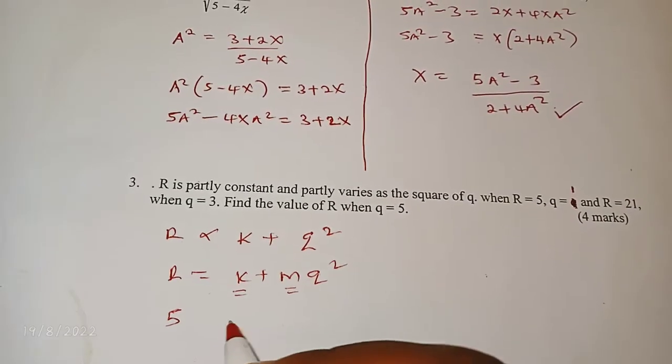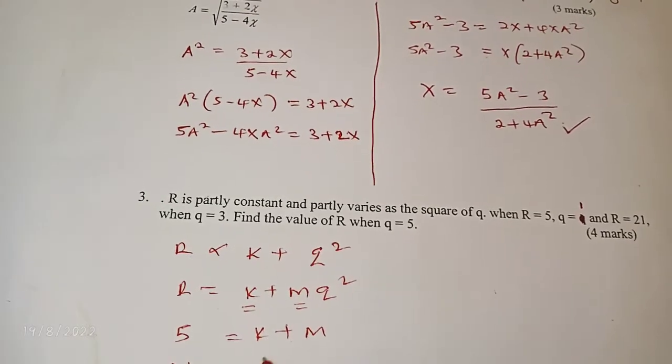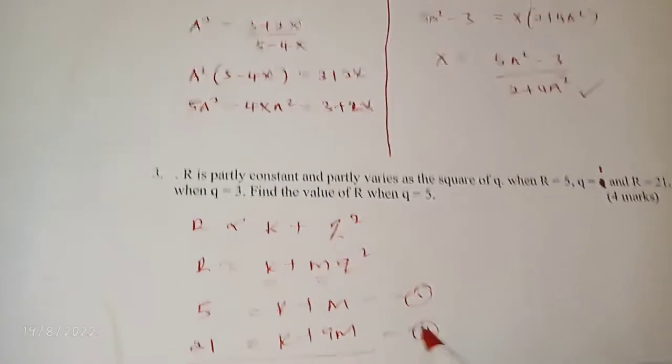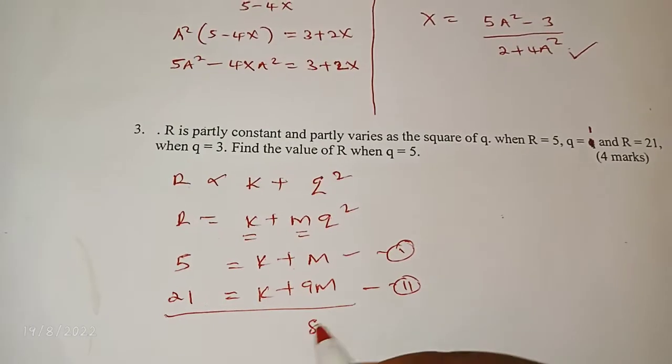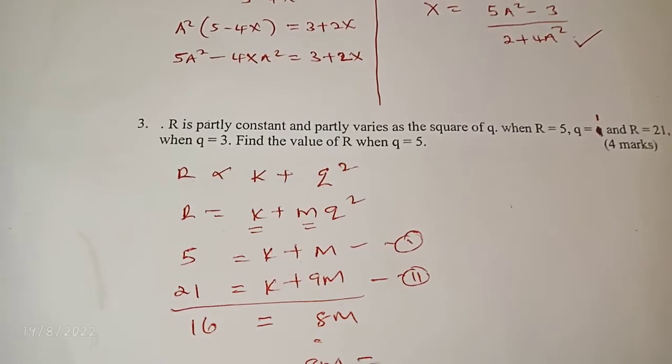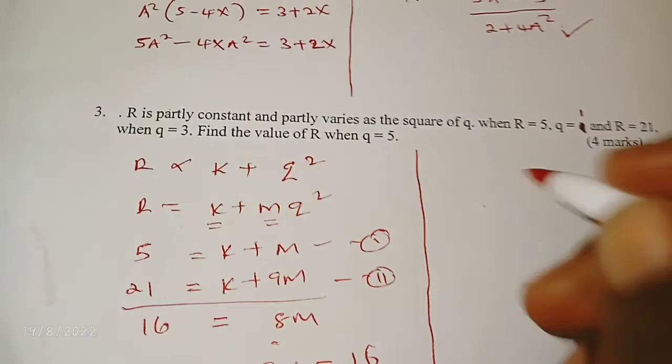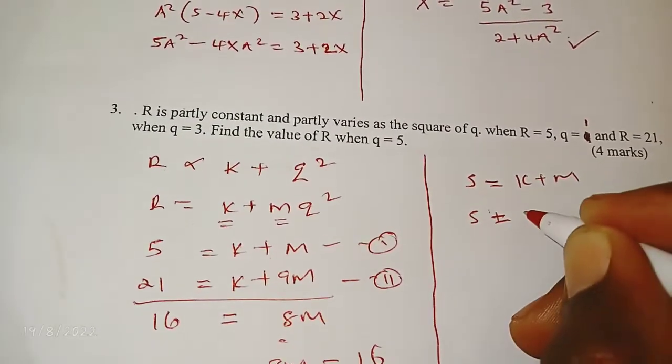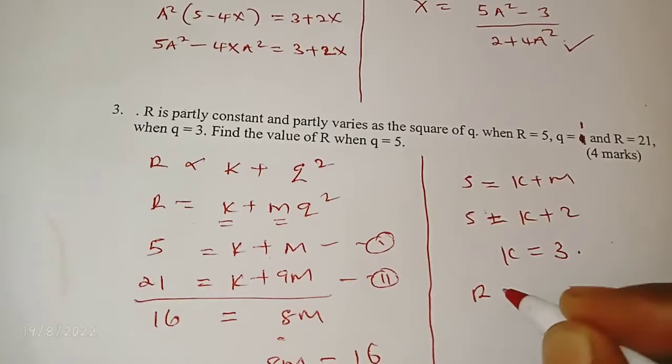Now we are told that when r is 5, q is 1, so we have k plus m. And when r is 21, q equals 3, so we have k plus 9m. So we want to solve these two as two equations simultaneously. When you solve this, you're going to get 8m equals 16, so we've got to divide both sides by 8. We have m is 2. So when we take the first equation, 5 equals k plus m, m is 2, so we determine the value of k, which is going to be equal to 3.